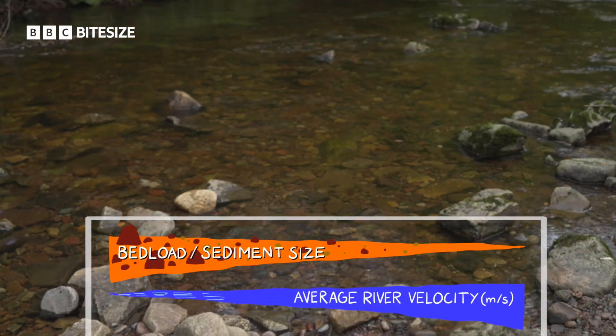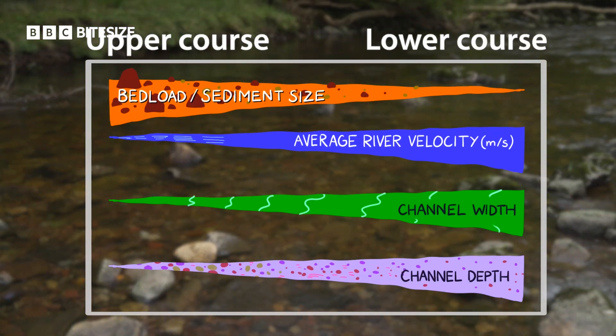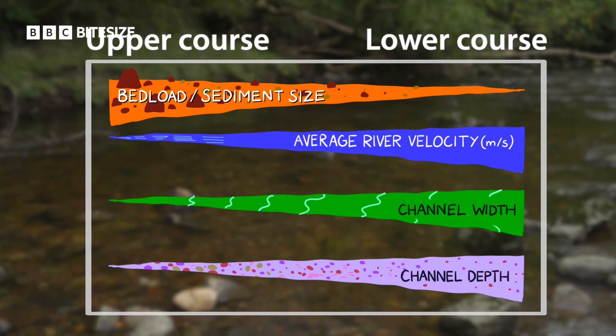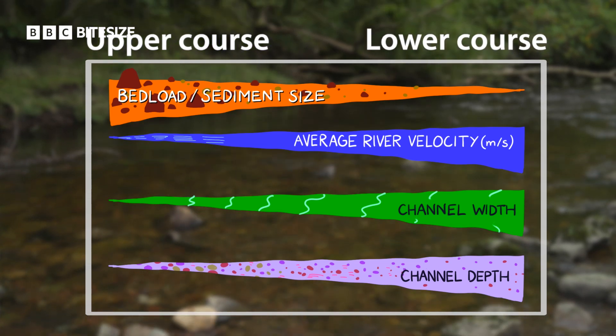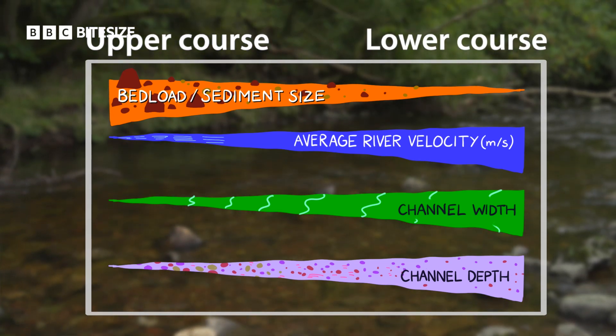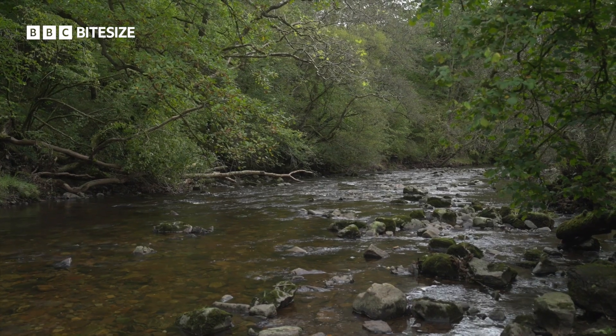This model suggests that bed load will decrease in size along the course, that velocity will generally increase, and that the river will become deeper and wider as it goes down the course.